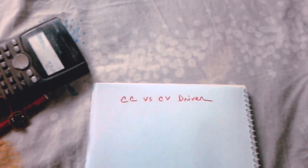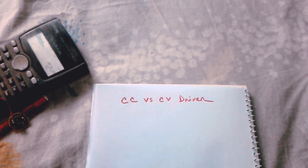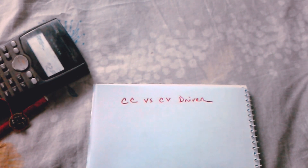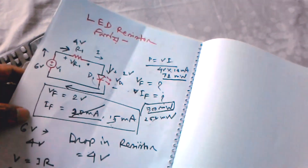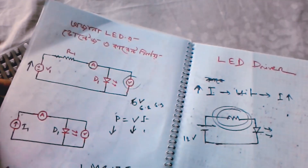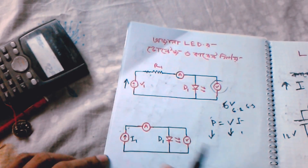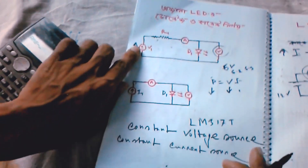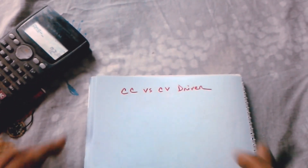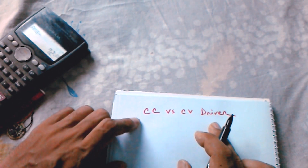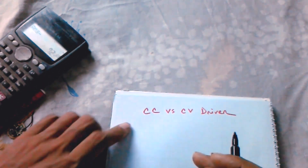When we want to, each of you is the constant water source and current source. The same driver is constant current, and the CV driver can be constant voltage.